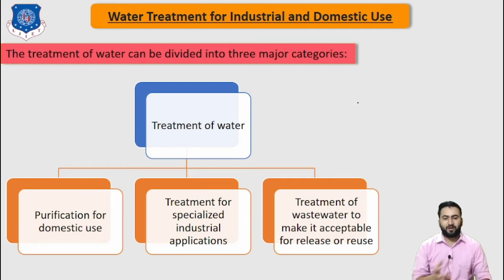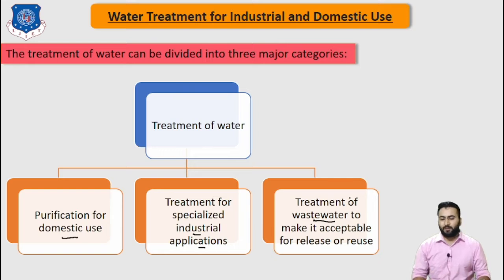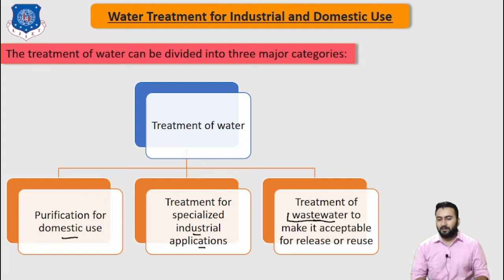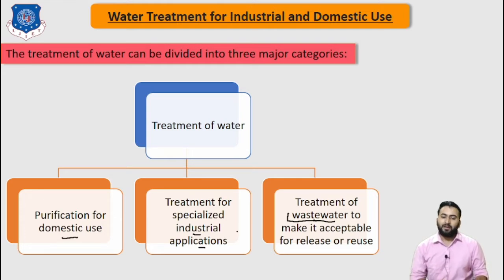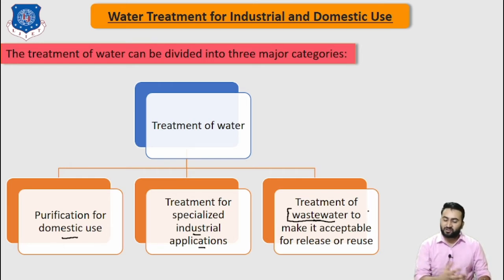The treatment of water can be divided into three major categories. One is purification for the domestic or municipal water, treatment for the special industrial application, and third, the treatment of waste water. Always remember the difference between treatment of waste water, purification for the domestic use, and purification for the industrial use. For waste water treatment, which has a high amount of waste and hazardous chemicals.